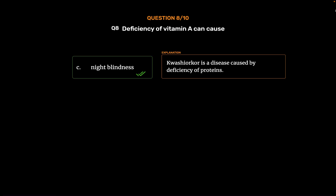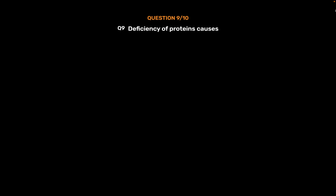Kwashiorkor is a disease caused by deficiency of proteins. Question number 9. Deficiency of proteins causes. Option A: Goiter.